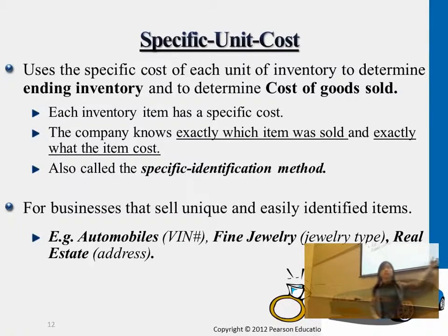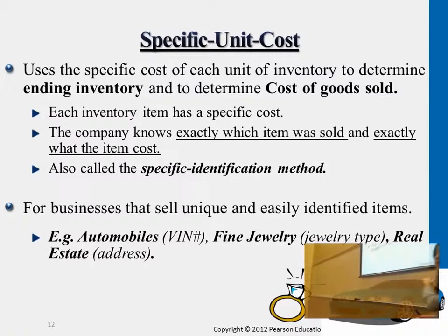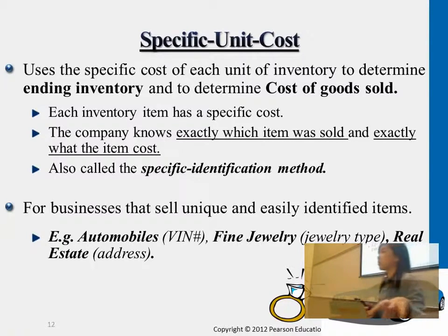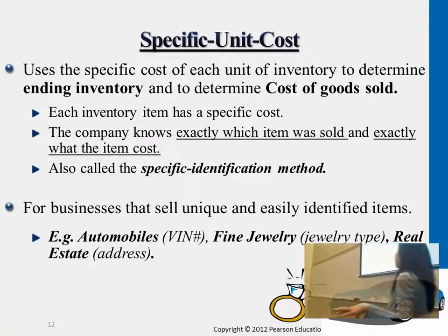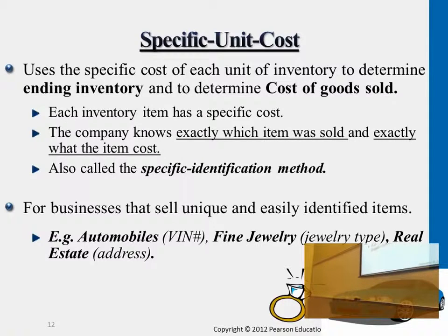For more expensive products, businesses actually do keep track of the original purchase cost and use that to journalize an entry when a customer purchases that specific car or that specific ring or earrings. This is called the specific identification method.